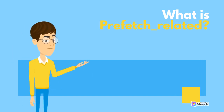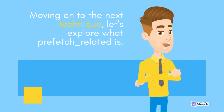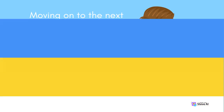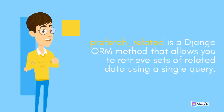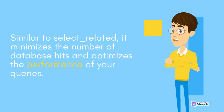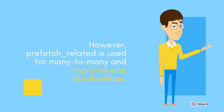Moving on to the next technique, let's explore what prefetch_related is. prefetch_related is a Django ORM method that allows you to retrieve sets of related data using a single query. Similar to select_related, it minimizes the number of database hits and optimizes the performance of your queries. However, prefetch_related is used for many-to-many and many-to-one relationships.